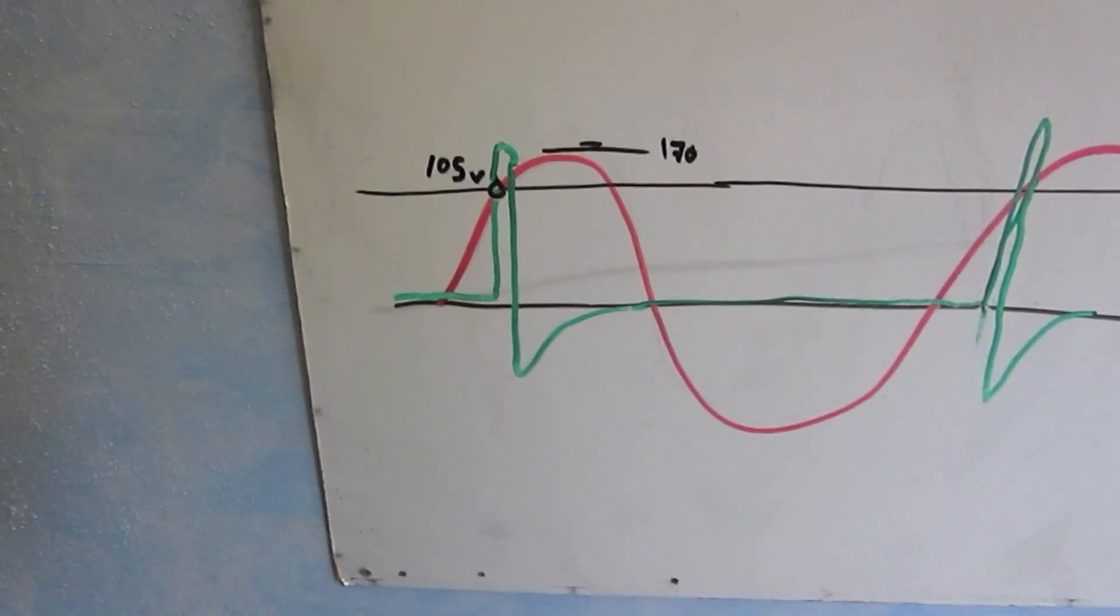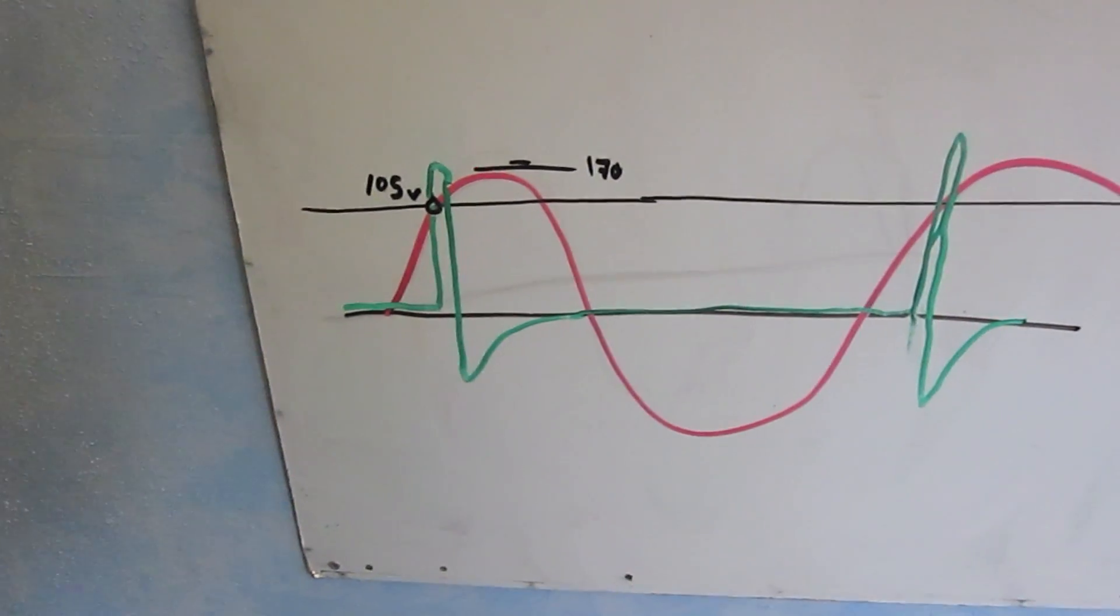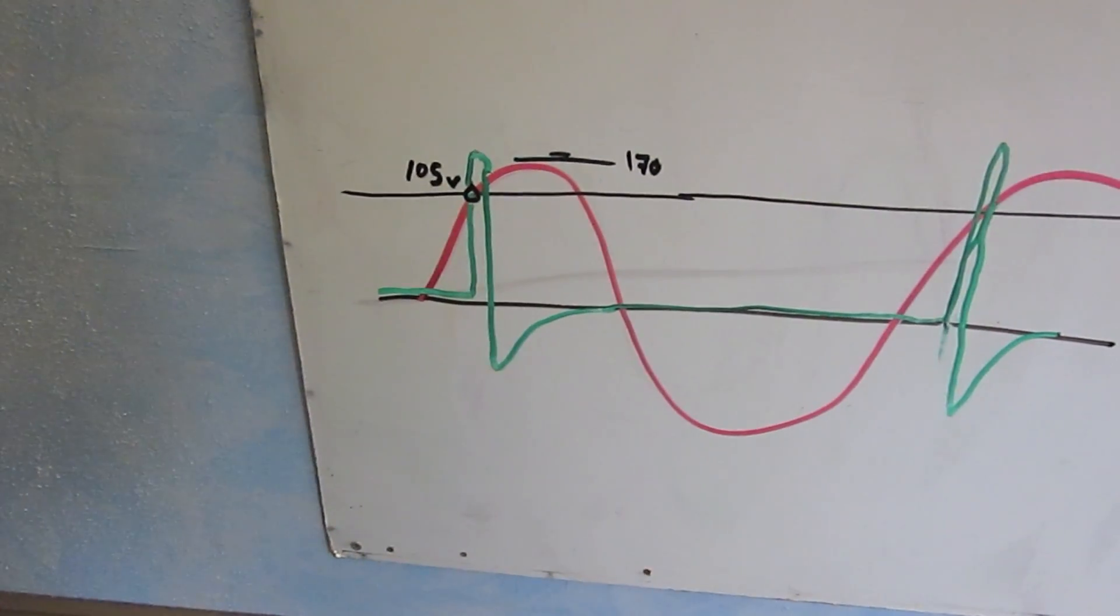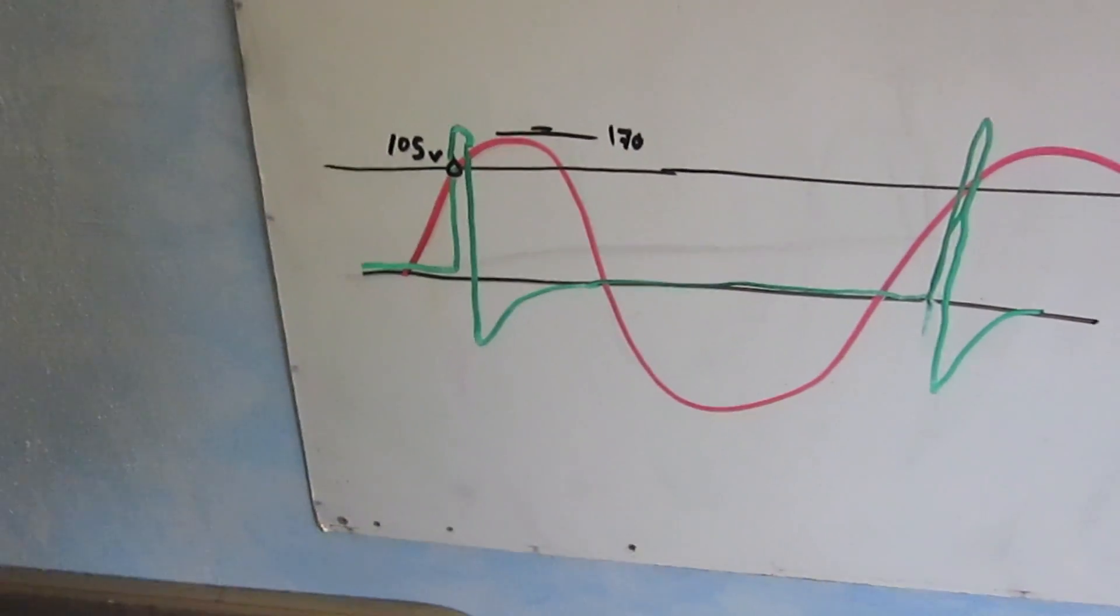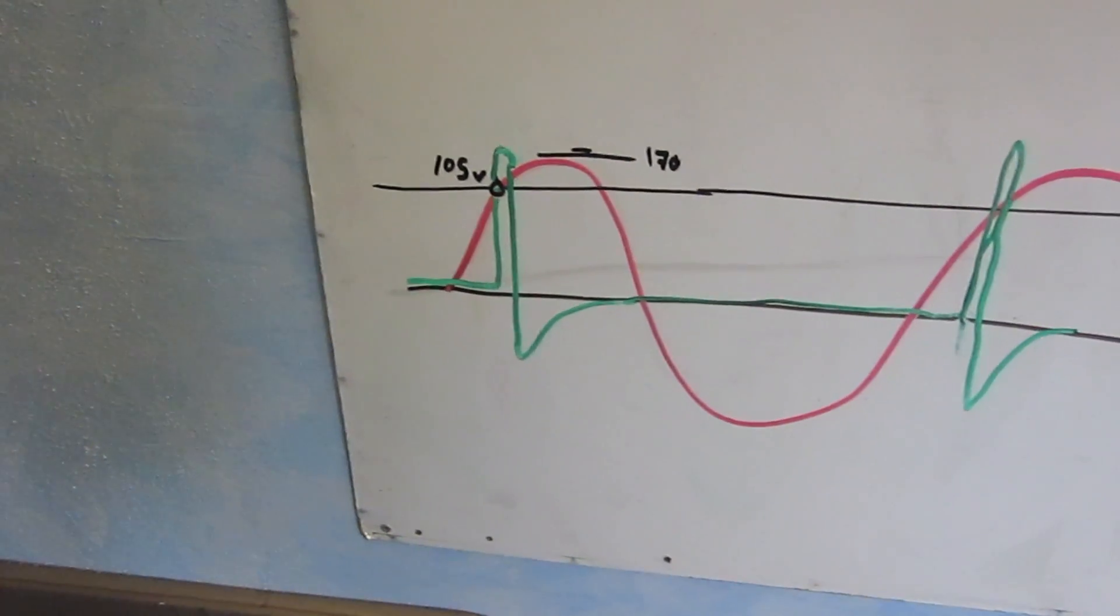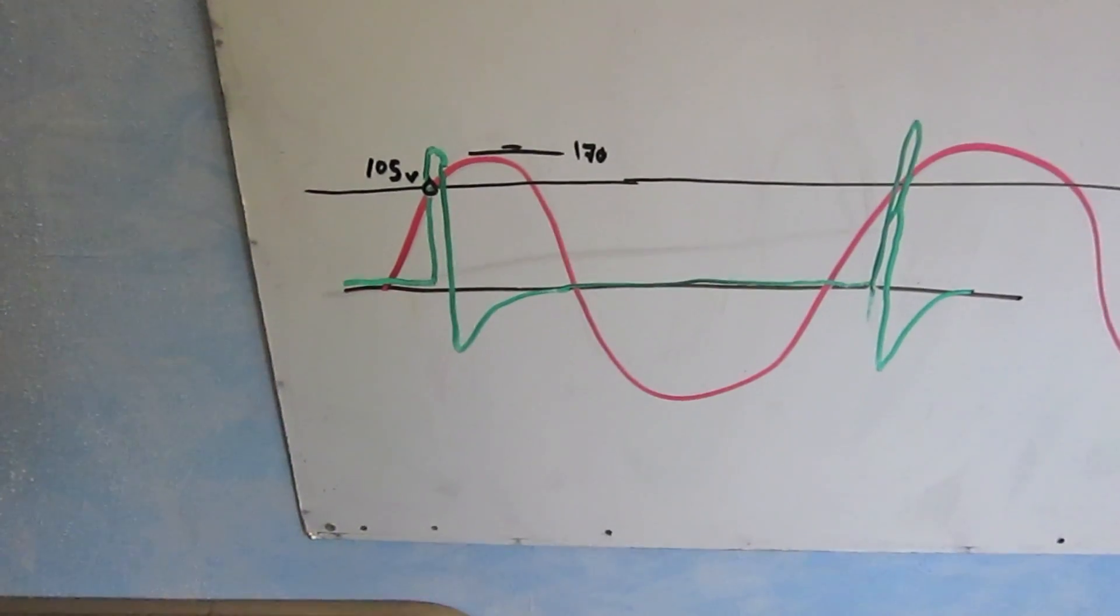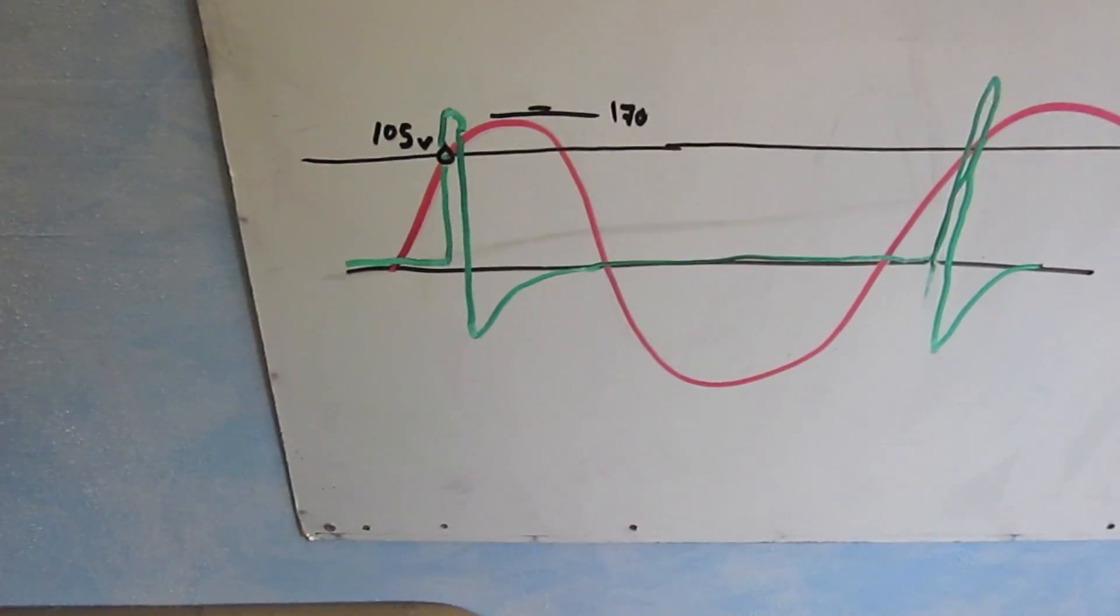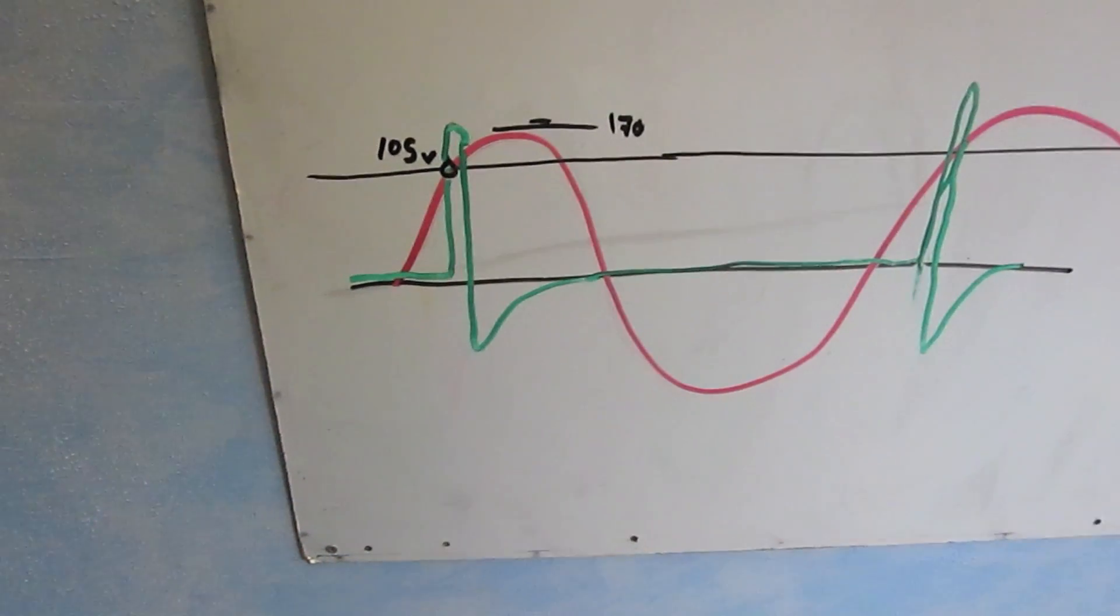And it behaves similar to a triac or an SCR. In that once it starts conducting, it'll continue conducting until the voltage across the device crosses zero. So what you see here is the approximate waveform. Although this is something that occurs on the order of microseconds, not the milliseconds that is depicted here.